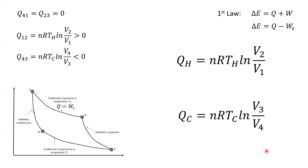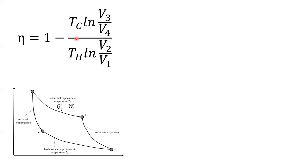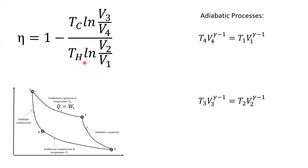Now that we've got our expressions for the Qs, we plug them into the formula for efficiency — that's one minus QC over QH. The NR terms cancel. And it would be nice if the logarithmic terms also canceled, because then we would have an expression involving only temperature — an awesome simple expression for the maximum possible efficiency of a heat engine. So let's show that directly.